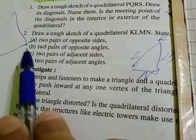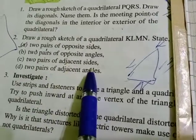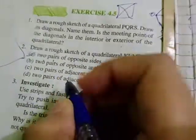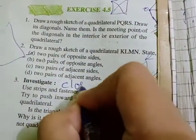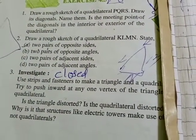Question number 2C: two pairs of adjacent sides. Adjacent sides means closed sides. Nearby, that is known as adjacent sides.